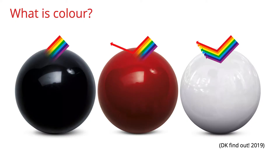Colour is a part of the world around us. It attracts attention, it speaks to us emotionally, and it conveys messages culturally. Colour theory is a complex science, but we're just going to cover it simply today. One of the things you need to know is that colour is a property of light, not of the object itself.